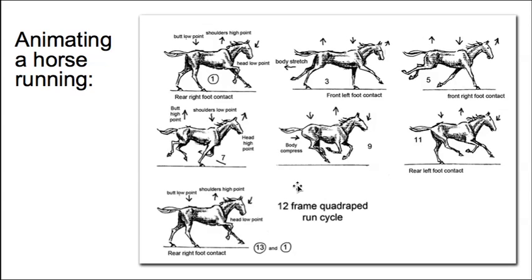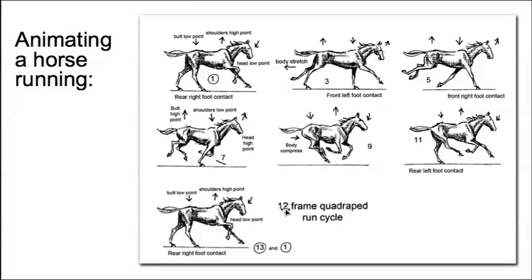The run is rather like the walk cycle in the sense that the body is making a rocking motion. Shoulders go up, butt goes down, butt goes up, shoulders go down. It's making a seesaw motion as it's running along. So you need to pay special attention to these up and down positions on the shoulders and on the hindquarters.